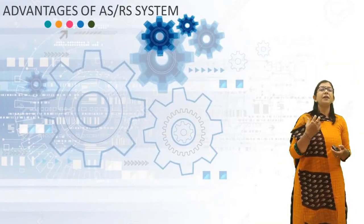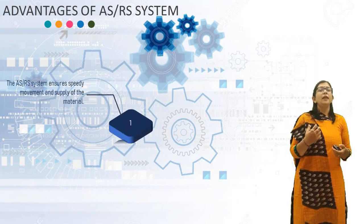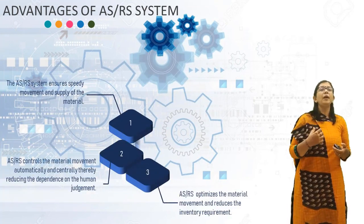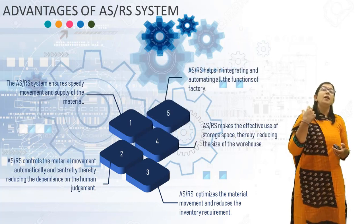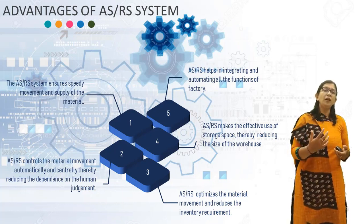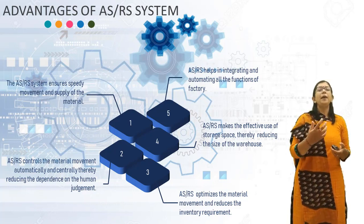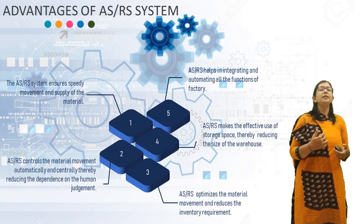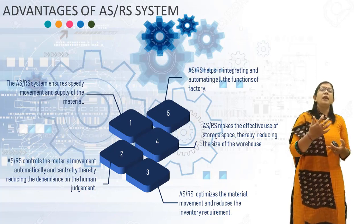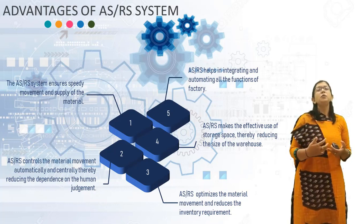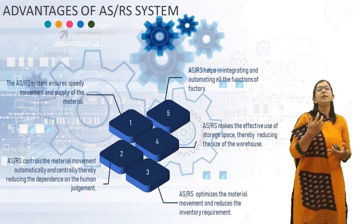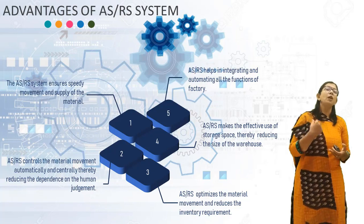Now, what are the advantages of the ASRS system? The ASRS system ensures speedy movement and supply of materials. ASRS controls material movement automatically and centrally, thereby reducing dependence on human judgment. ASRS optimizes material movement and reduces inventory requirements. ASRS makes effective use of storage space, thereby reducing the size of the warehouse. Lastly, it helps in integrating and automating all the functions of the factory.